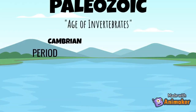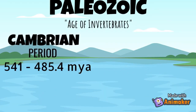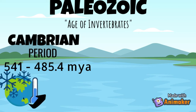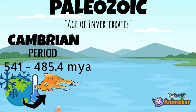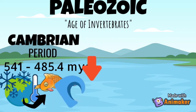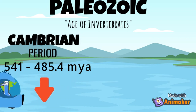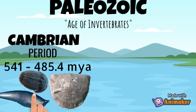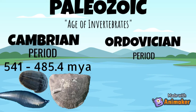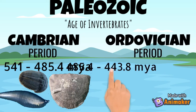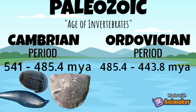The Cambrian period was 541 to 485.4 million years ago. The Earth's cooler conditions eliminated many warm water species, and glaciation lowered global sea level, but there was no significant ice formation. Chordates, brachiopods, and arthropods were seen in this period. After the Cambrian period is the Ordovician period, which was 485.4 to 443.8 million years ago.